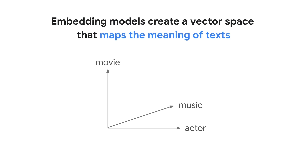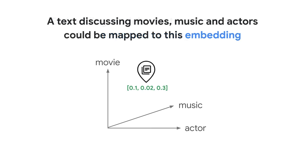Think of it as a map where each text is a point representing its meaning. For example, if a model analyzes a text discussing movies for 10%, music for 2%, and actors for 30%, it might represent it with the embeddings 0.1, 0.02, and 0.3.